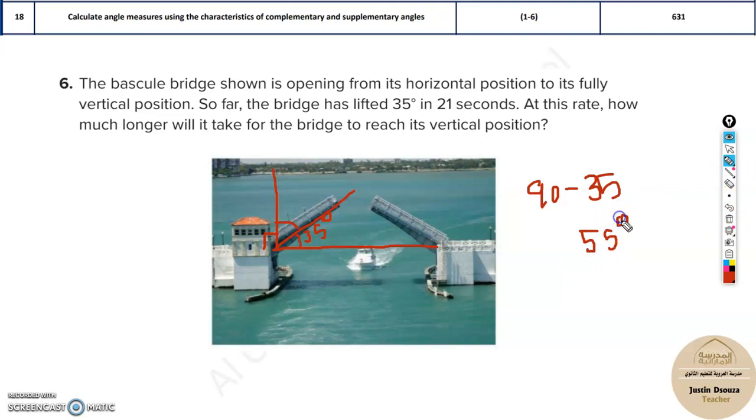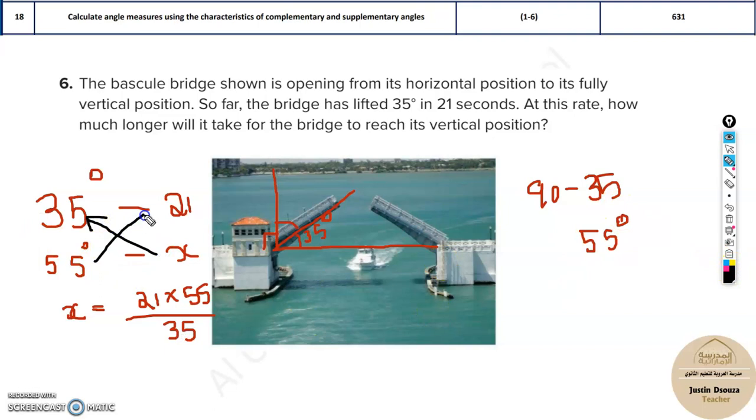So now if you do cross multiplication of the quantities, you will find it. So now we can just understand for 35 degrees it took 21 seconds. So how much seconds will it take for 55 degrees? This will be x. Now we will just cross multiply and find it. Take x to the other side, it will be x equals 21 into 55 divided by 35. So you can put this in the calculator. Just remember you cross multiply. So this goes up and this comes down. So it is 21 multiplied by 55 divided by 35.